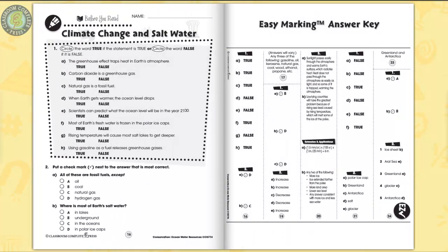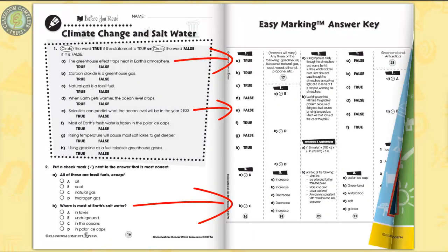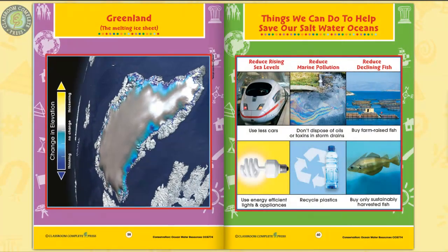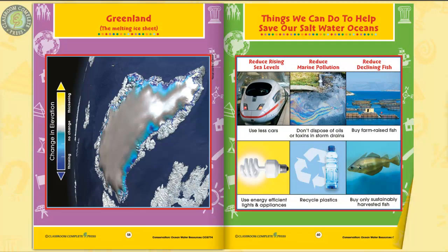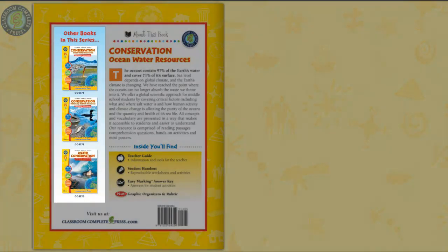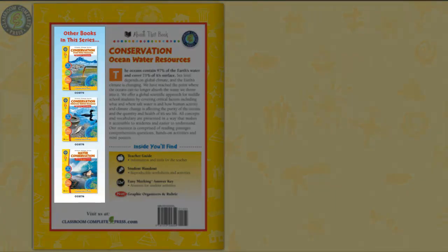The easy marking answer key works by lining up perfectly with the matching question pages. Six color mini posters completes the resource. Get tips on what we can do to help protect ocean water. Conservation Ocean Water Resources is just one resource of a three-part series on water conservation.